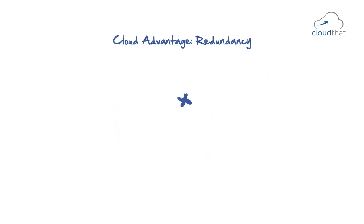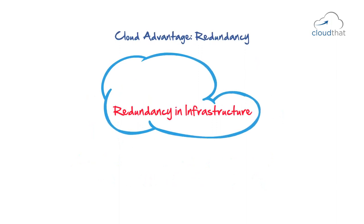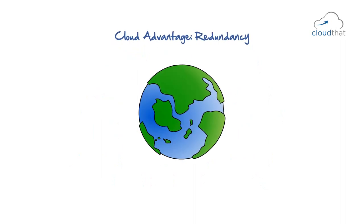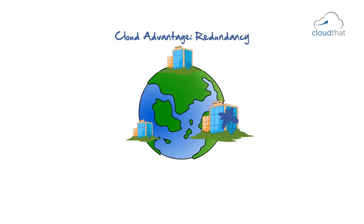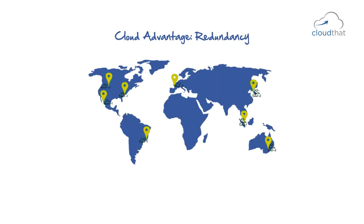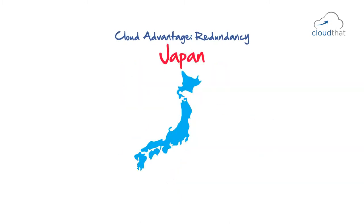Another advantage you get from cloud is redundancy in infrastructure. Cloud providers have data centers in multiple geographic locations. Amazon Web Services has infrastructure in the US, Brazil, Europe, Japan, Australia, and China, covering the majority of the world.